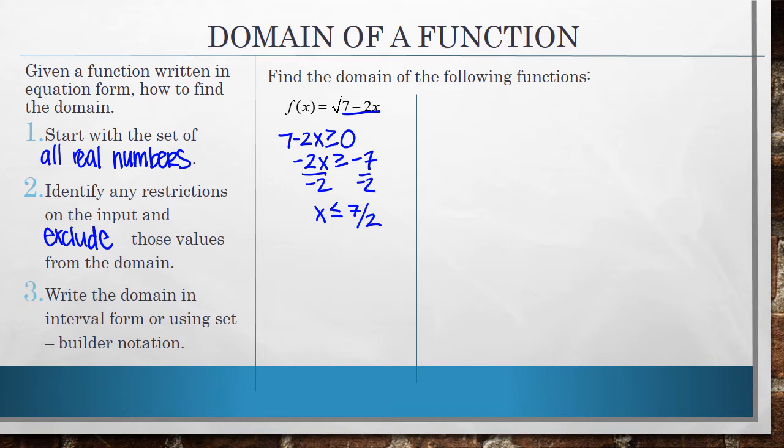I can check to make sure I've done it right by letting x equal a number that's less than or equal to 7 halves, which would be, for example, 0. 7 minus 2 times 0 is 7, and the square root of 7 is a valid answer. So when I write this, I can write it in interval or set builder notation. I'll do both for you right now just so you can practice it.